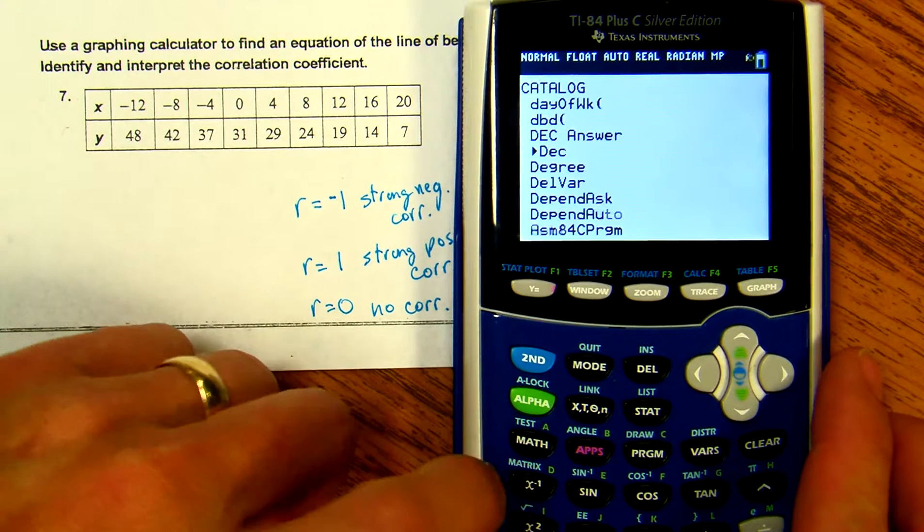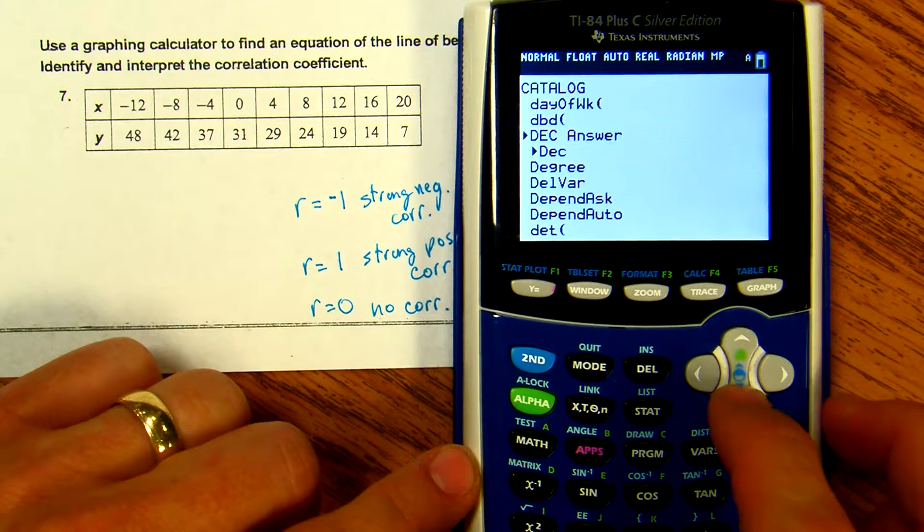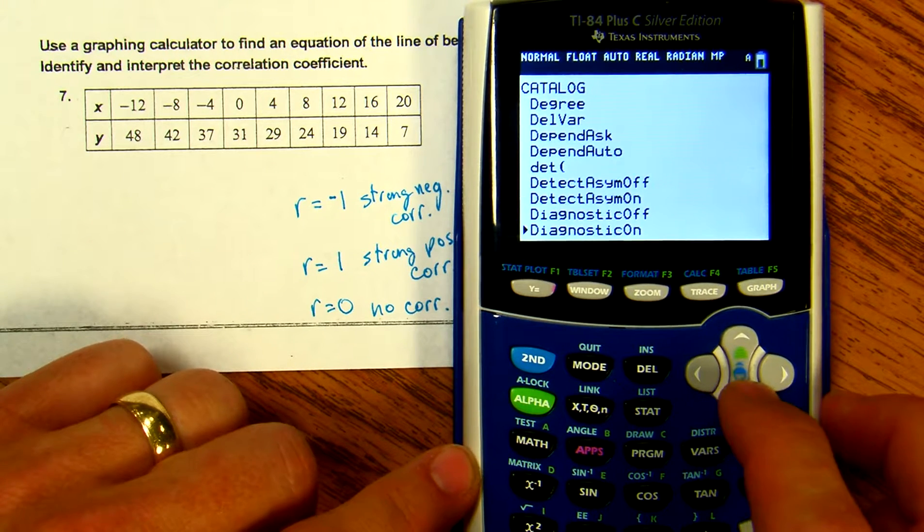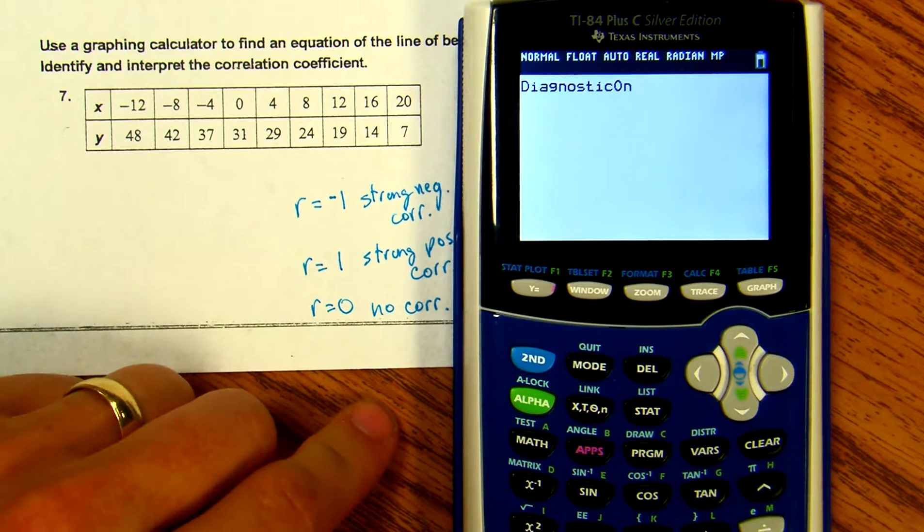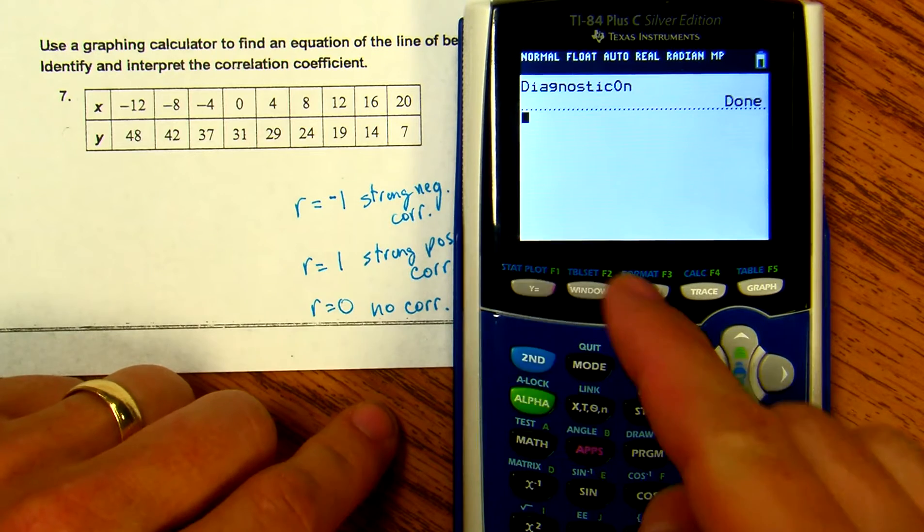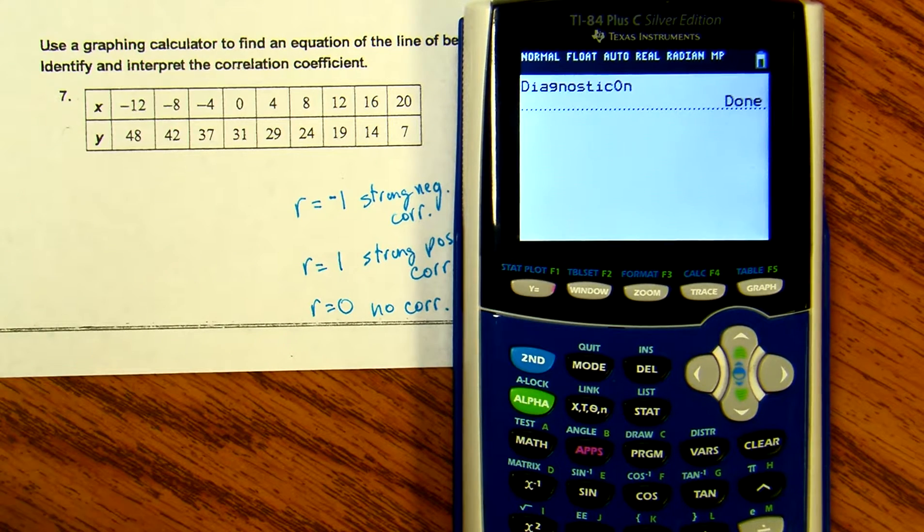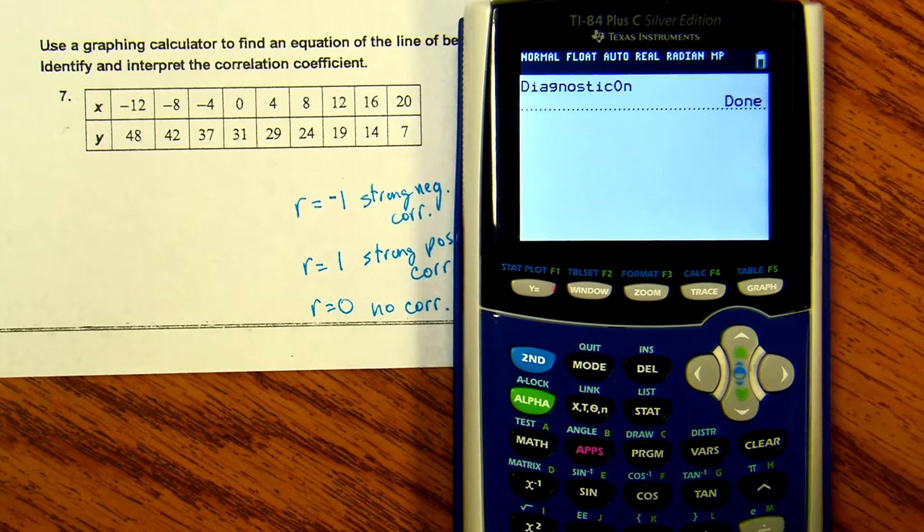Go down to Diagnostics On. Hit enter and hit enter again, and your diagnostics will be turned on. That will show your r values in case your calculator isn't set up to show them. Hope this helped.